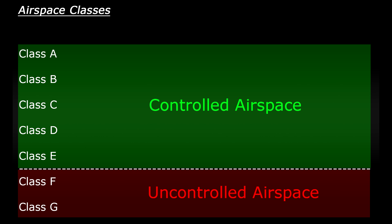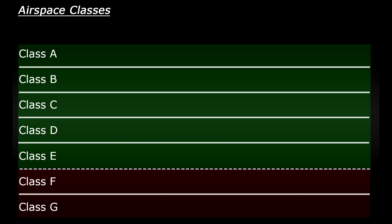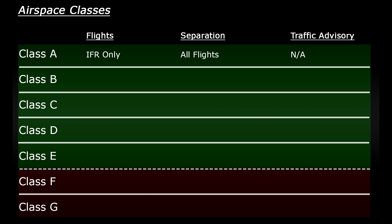Starting at the top: for class A airspace, only IFR flights are allowed and they must be cleared by air traffic control before entering. ATC are also responsible for ensuring planes are kept a safe distance away from each other. For class B airspace, IFR and VFR flights are allowed provided they've been given clearance, and air traffic control ensure safe separation for all flights within the airspace.